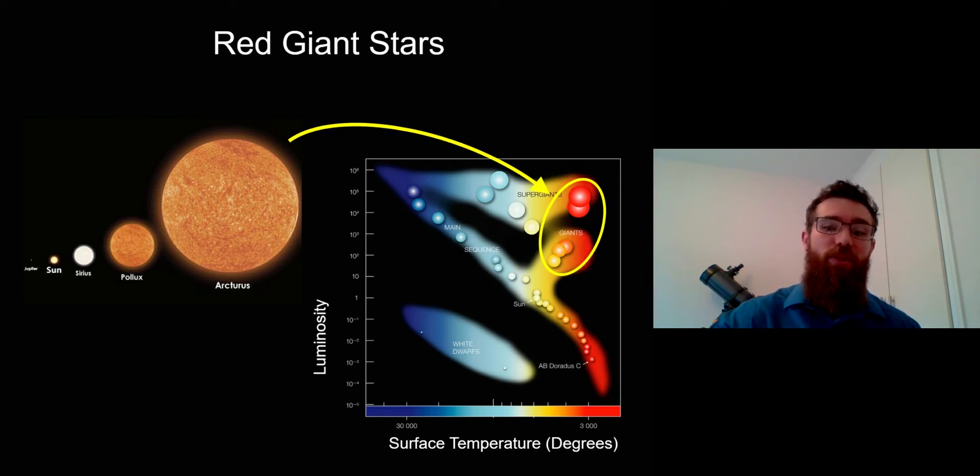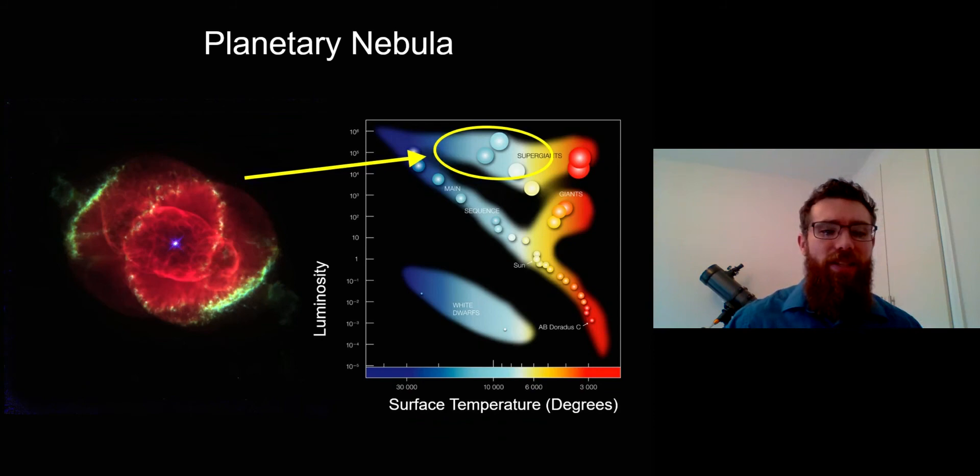At the end of that part of their life, they start to move across the top of the HR diagram. They shed those outer layers of the red giant, and the bright central core is then exposed and illuminates their outer layers. You end up with this planetary nebula.